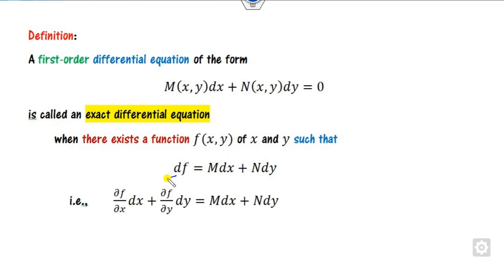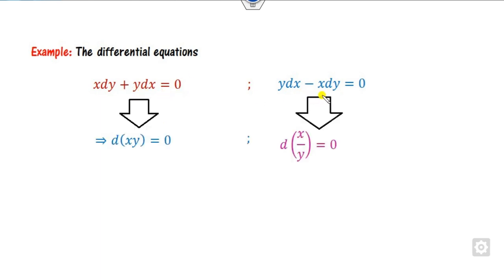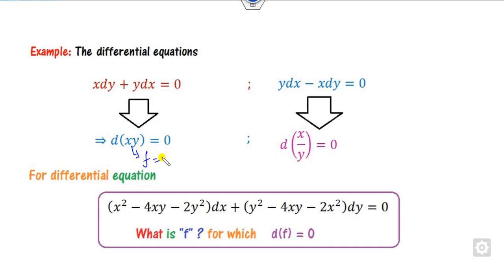For example, if you find a function which can represent the given expression, you can easily find that it is nothing but xy. So this is an exact differential equation. Similarly, if you divide by y-squared, that too is an exact differential equation. But for more complex problems, how do you find the function f such that its derivative gives zero? You cannot easily identify such cases.